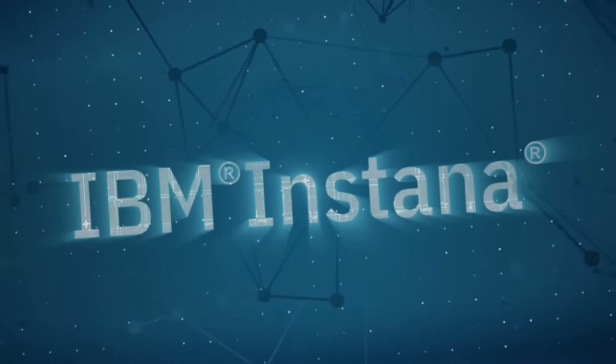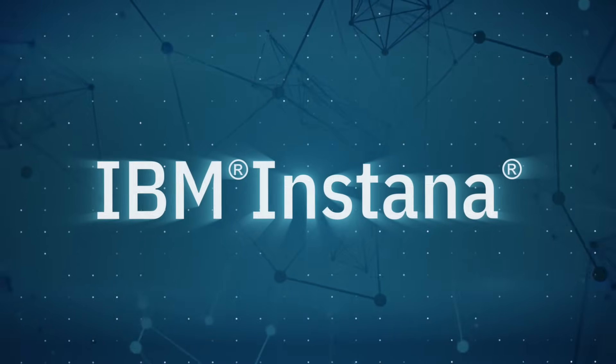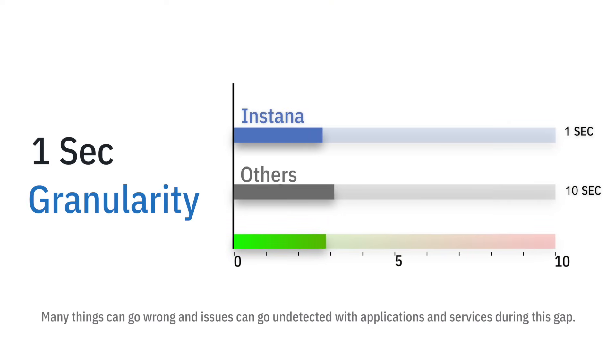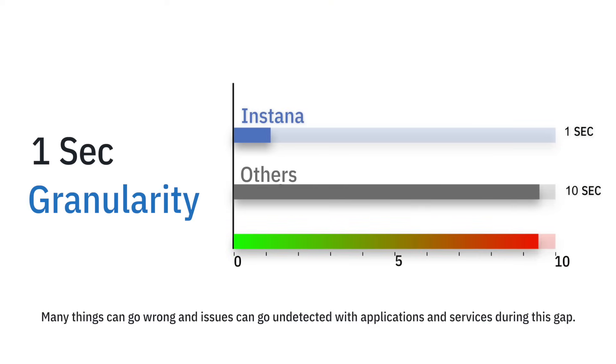That's exactly the problem IBM Instana has resolved. IBM Instana gives you real-time observability. Existing tools offer 10 seconds of granularity, but when it comes to monitoring business-critical applications, a lot can happen in 10 seconds. With IBM Instana, it's just one second visibility — every metric collected is at one-second resolution.